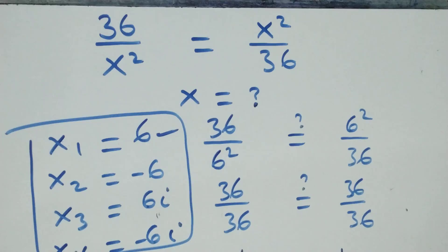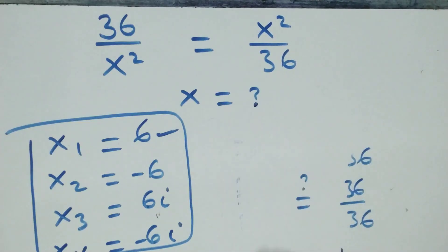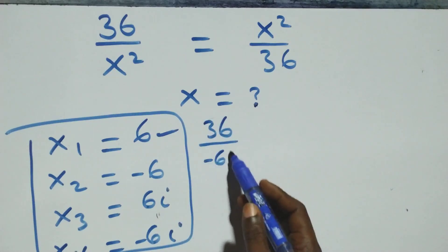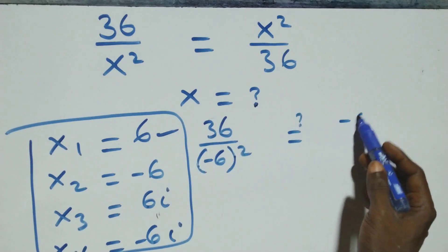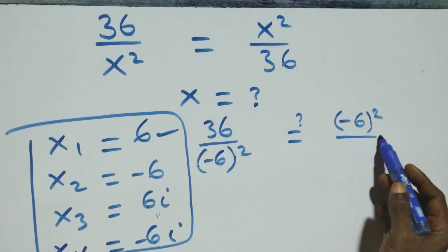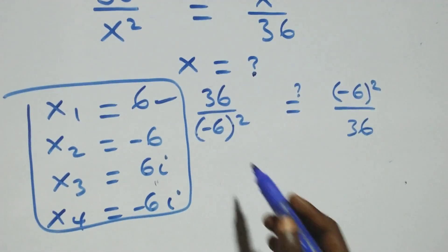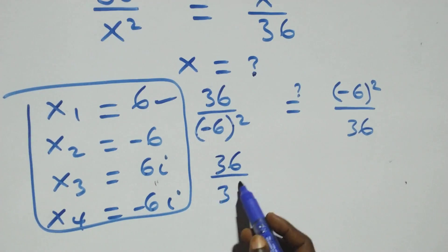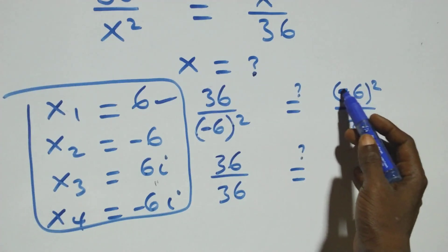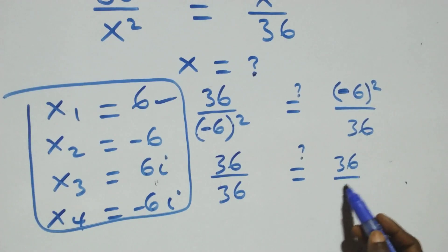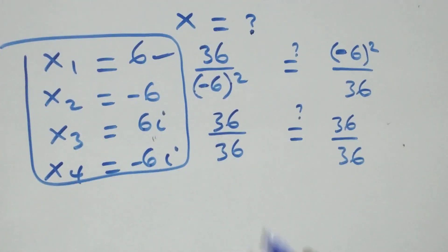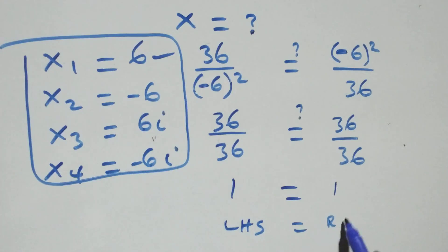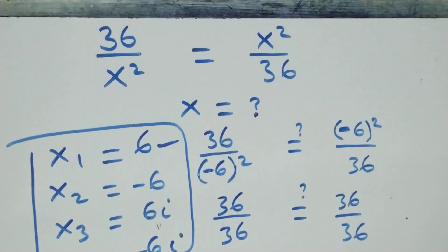We substitute x equals −6 as well. The equation becomes 36 over (−6) squared equals (−6) squared over 36. Squaring the negative gives plus 36, so 36 over 36 equals 36 over 36, which is 1 equals 1. Therefore, x = −6 also satisfies the given problem.